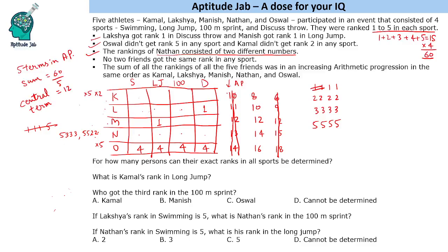Let us now look at Kamal's small sum of 8. He cannot use rank 2, so he must use rank 1. He cannot use three 1s as that would exhaust rank 1 usage. So the only possibility is 1,1,3,3. This means Kamal gets rank 1 twice and rank 3 twice. All rank-1s have now been used.